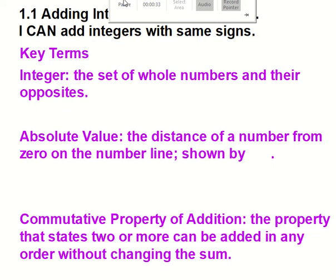This is 1.1, adding integers with same signs. Your essential question is, I can add integers with same signs. It's important that you have your note-taker open and you are filling out anything that we add to the flip chart. If you notice on your note-taker, you have the three key terms: integer, absolute value, and the commutative property of addition, but you do not have the definitions. We would like you to pause this video and take a second to fill in the definitions. If this is left blank, then you will not get credit on your note-taker.